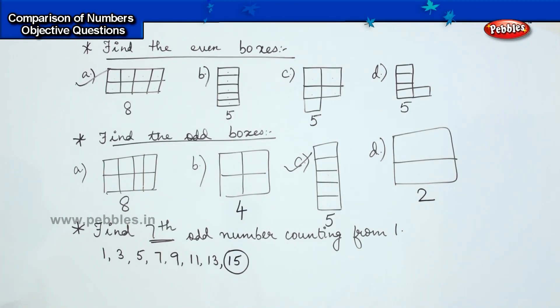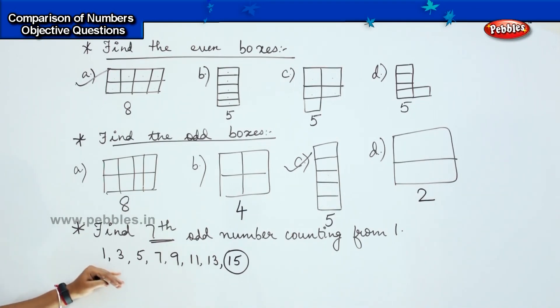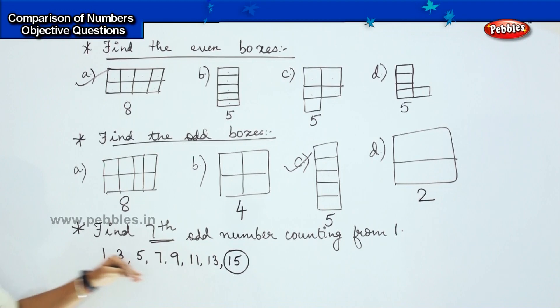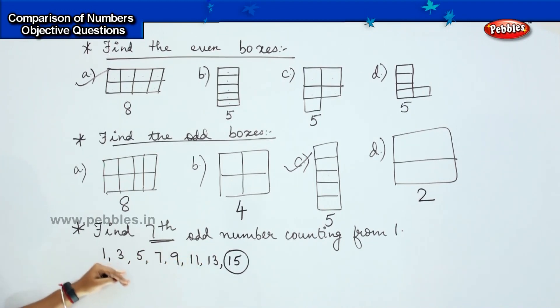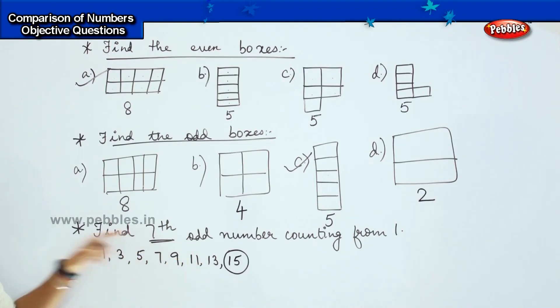Did you understand, children? In this question, you will not be writing the numbers consecutively. You will write only the odd numbers and find out the answer. Clear?